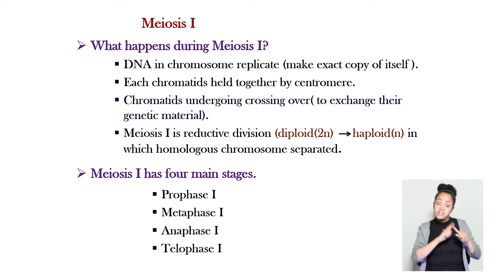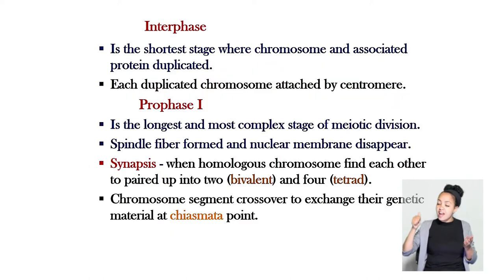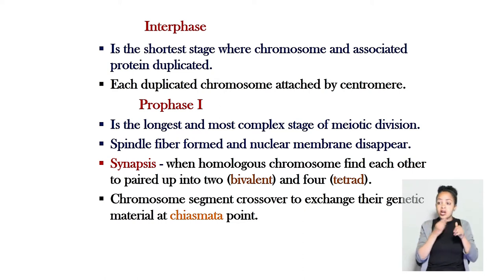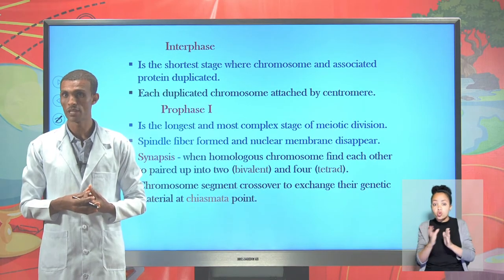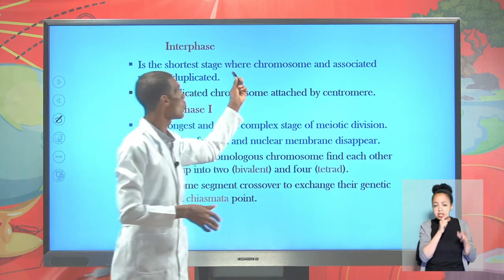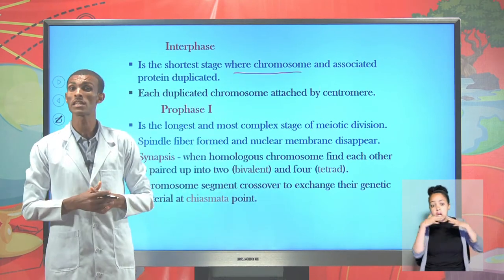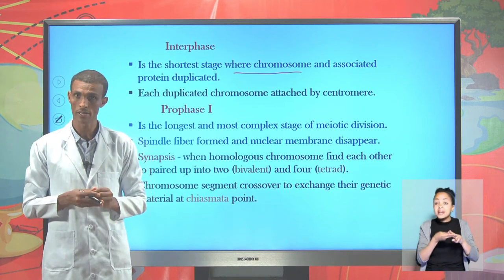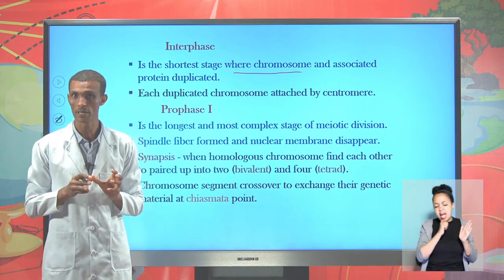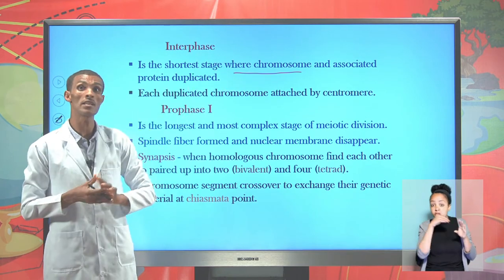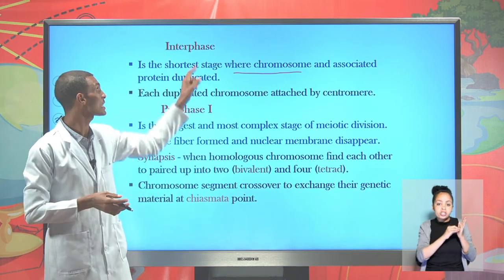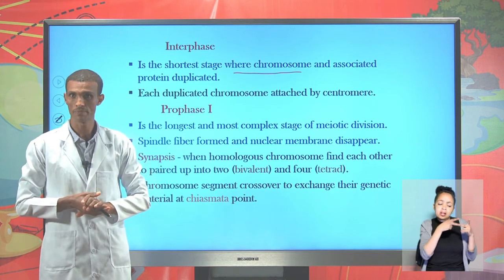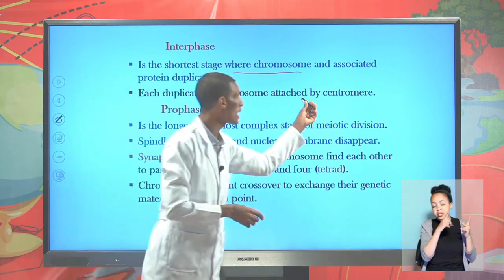The four stages of meiosis I are: Prophase I, Metaphase I, Anaphase I, and Telophase I. Meiosis I begins with interphase, which is considered a preparatory phase during which chromosomes and associated histone proteins become duplicated — making an exact copy. No other phase is involved in chromosomal duplication except interphase, where the copies are joined by the centromere.